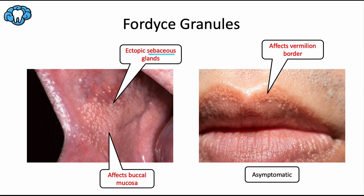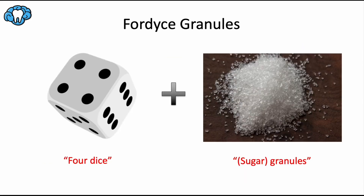These bumps are completely harmless and completely painless. However, there is some interesting research indicating that Fordyce granules may be an indicator of hyperlipidemia or high cholesterol, because individuals with an elevated lipid profile tend to have the highest amount of clinically detectable Fordyce granules. For a memory tip, think of four dice — a die with lots of spots and dots — and then a pile of granulated sugar, which looks like the collection of raised sebaceous glands.